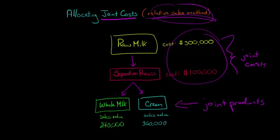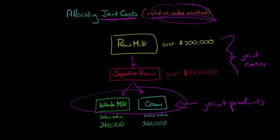So how are we going to do that? We're basically going to take the sales value at this point in time, at the split-off point. We're going to add the sales value of the whole milk with the sales value of the cream. That's going to give us total sales value, and this is estimated at $600,000.